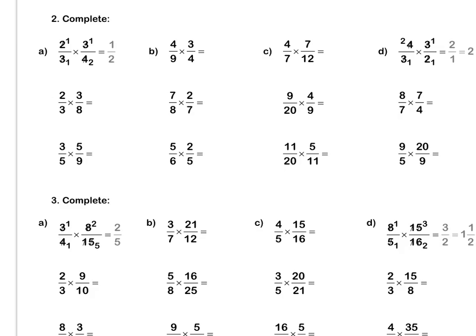Question 2. We have simplified our 3s to get 1 and 1. Then with 2 and 4, we divide by 2 to get 1 and 2, and we multiply out to get a half. Let's look at this question together. We divide by 3 to get 1 and 1. Then for our 2 and our 8, we can divide by 2 to get 1 and 4, and our final answer is a quarter. Lastly, let's do this sum together. We can divide by 9 and 9. Then our 4 and 20 — our highest common factor is 4 — so we can divide both by 4, giving 1 and 5. Our final answer is one fifth. Press pause to complete questions A, B and C by yourself.